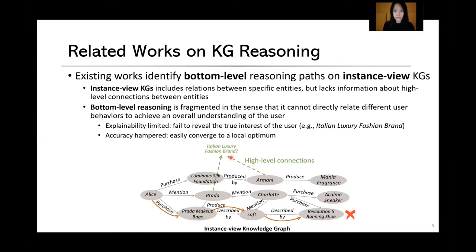For example, it cannot identify the concept of Italian luxury fashion brand, which limits its explainability. Moreover, accuracy is also hurt because such a fragmented reasoning process may easily converge to a local optimum.